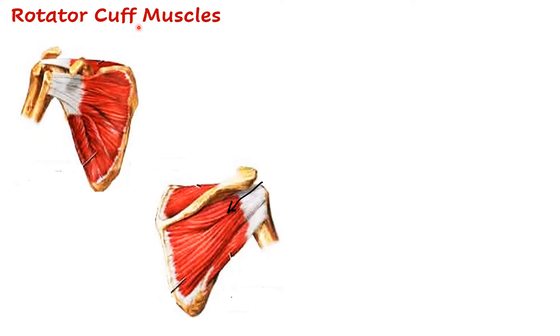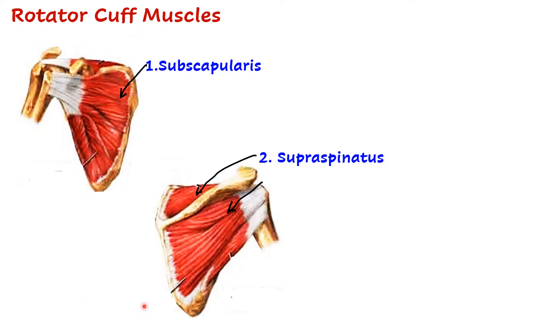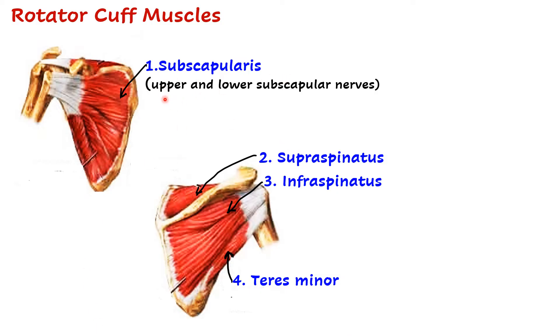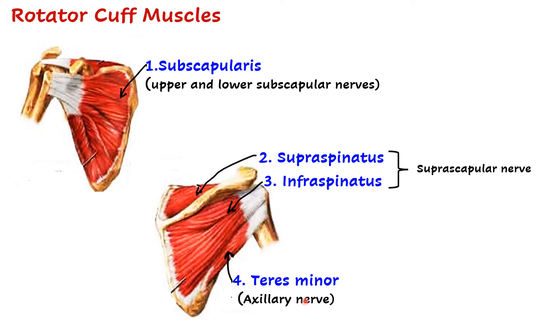Let us consider the muscles which form the rotator cuff or musculotendinous cuff around the shoulder joint. There are four muscles in total: on the ventral aspect of the scapula we have subscapularis, and on the dorsal aspect we have supraspinatus, infraspinatus, and teres minor. Subscapularis is supplied by the upper and lower subscapular nerves. Supraspinatus and infraspinatus are both supplied by the suprascapular nerve. Teres minor is supplied by the axillary nerve.